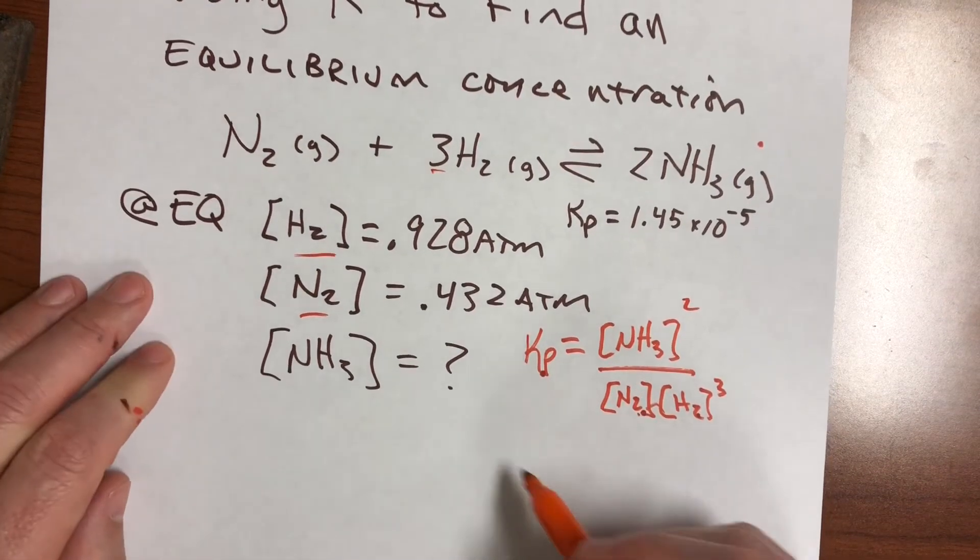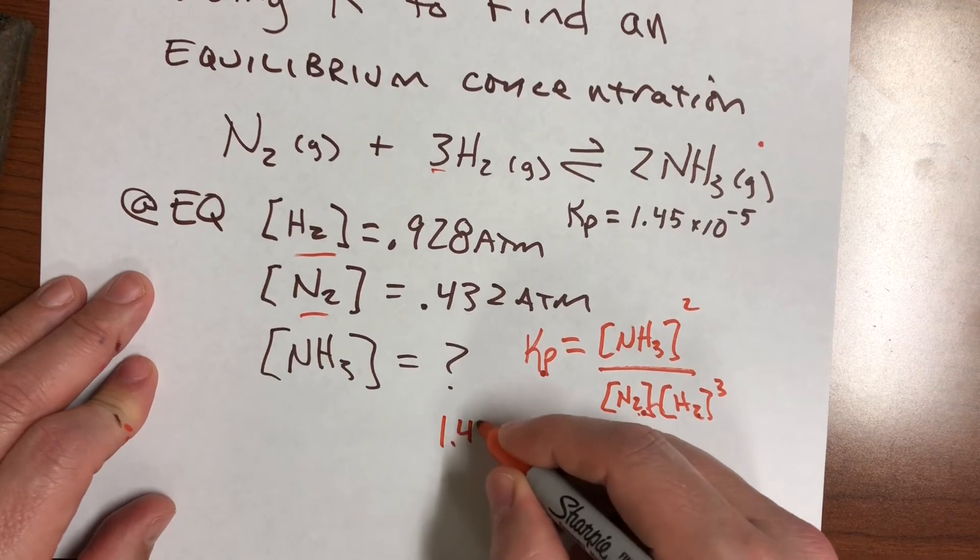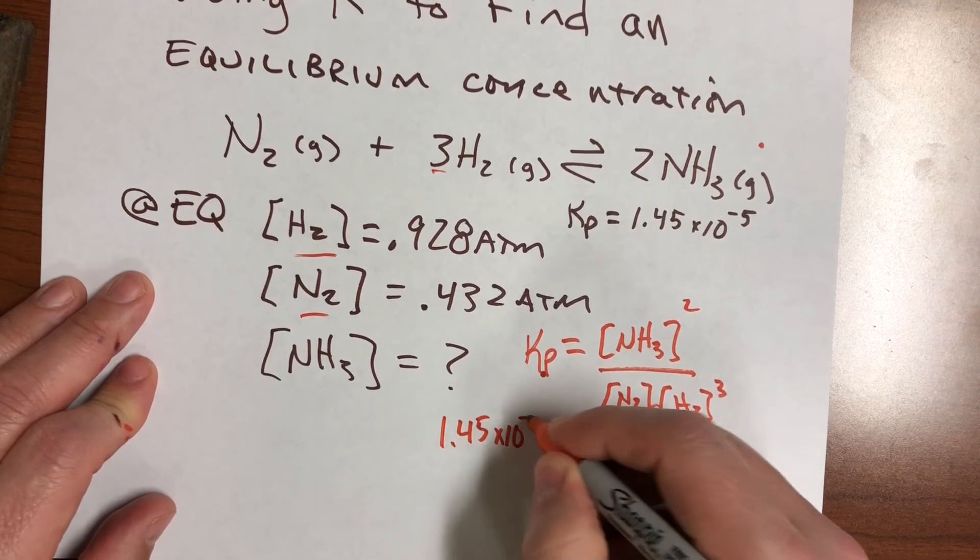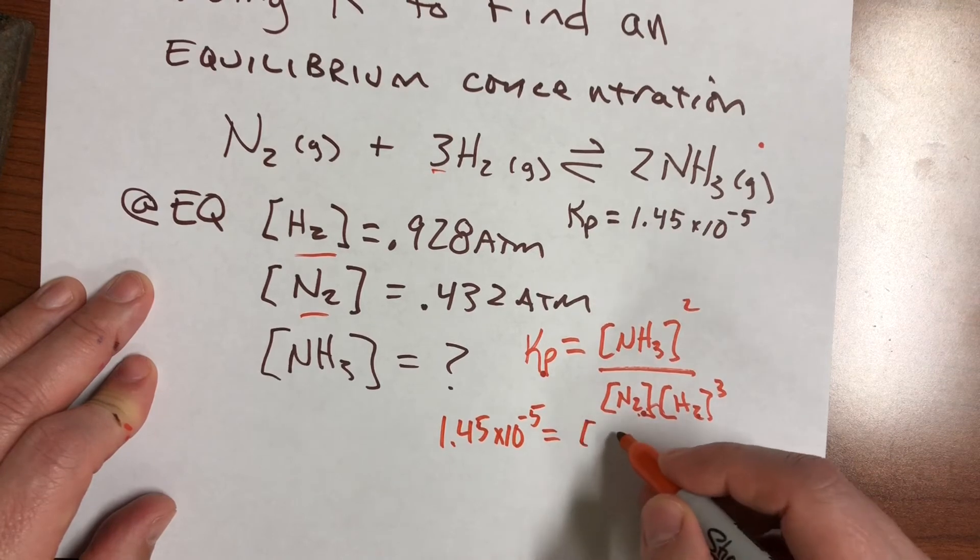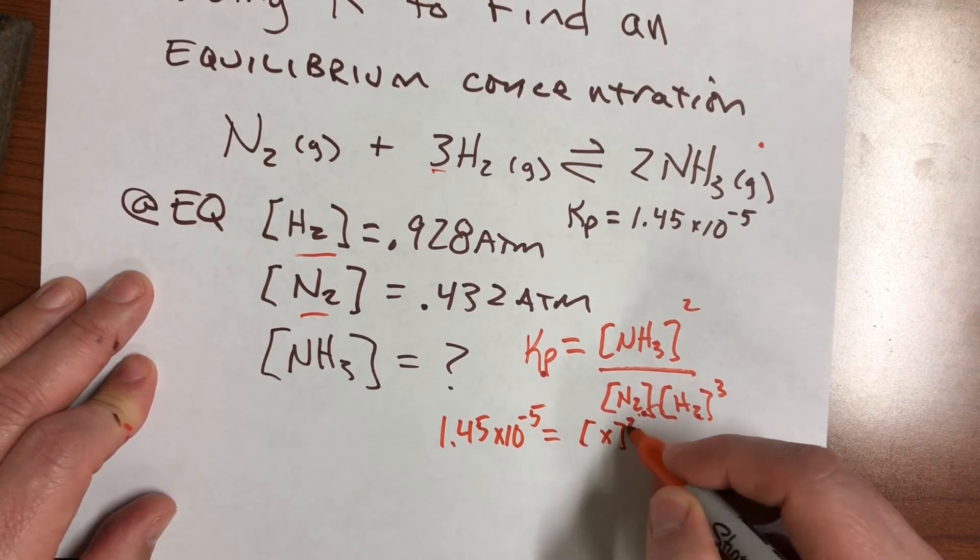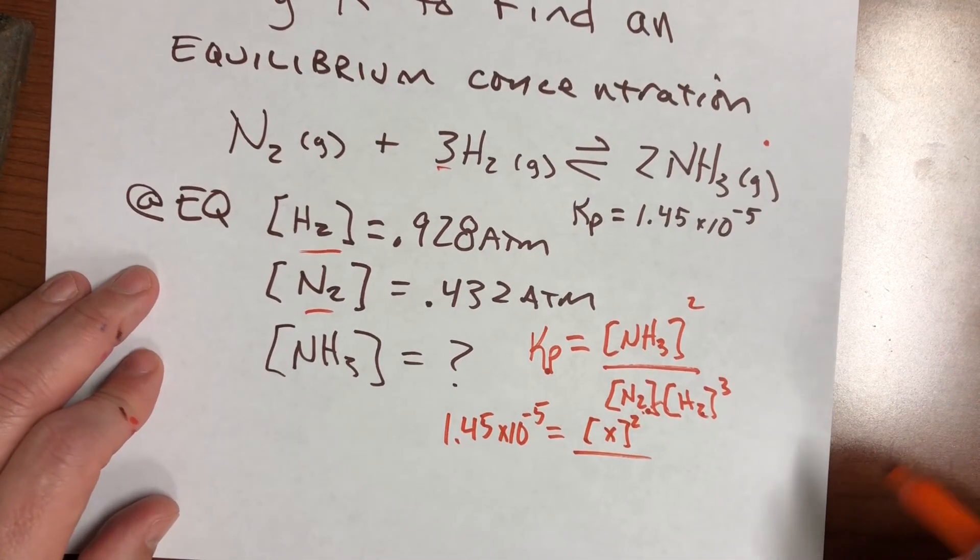So I'm going to go ahead and do that now. Kp is 1.45 times 10 to the negative 5th, and that equals the NH3, which I don't know. That's what I'm trying to find. I'm just going to go ahead and call that X. You can call it NH3. You can call it whatever you want.